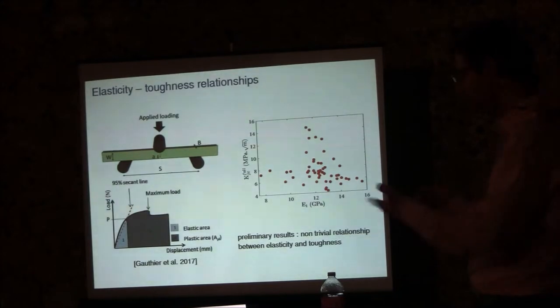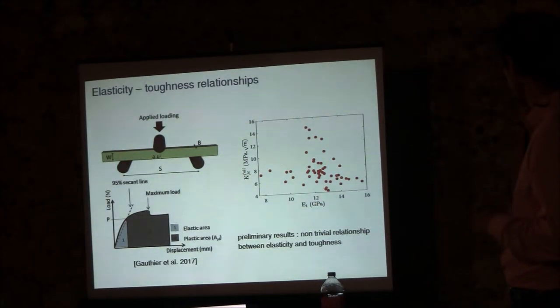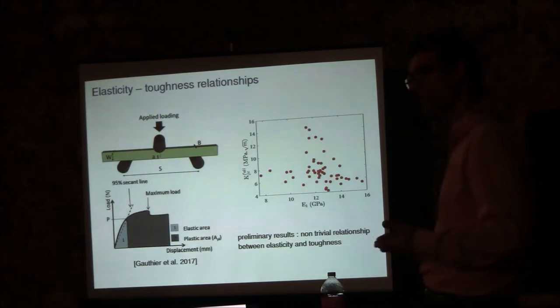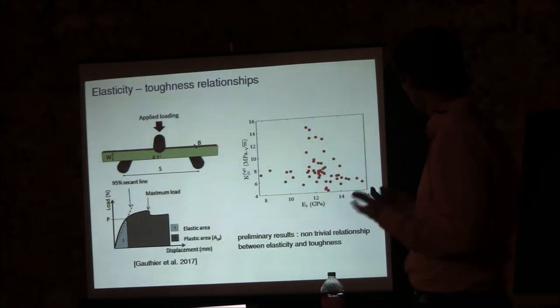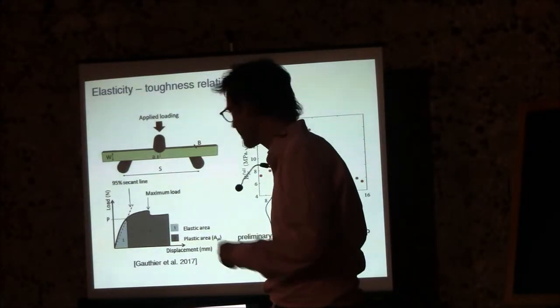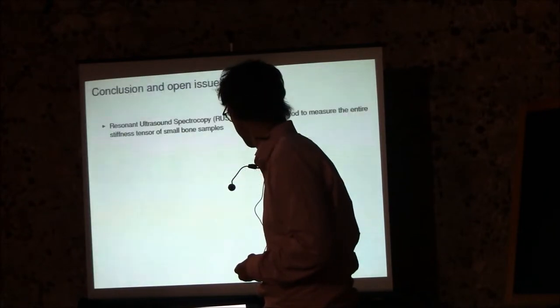The last result is one of the relationship between a result of the toughness experiment, which is the coefficient K, representative of the energy released with the propagation of a crack, and the Young modulus. And you see the result, as is, is not easy to interpret. There seems to be two populations of samples with two different trends of the variation of the Young modulus with toughness. So for now, we don't want to conclude on the relationship between toughness and Young modulus, but we are exploring more this data.